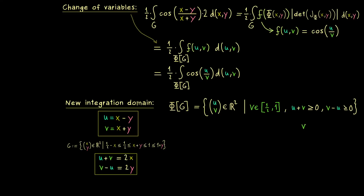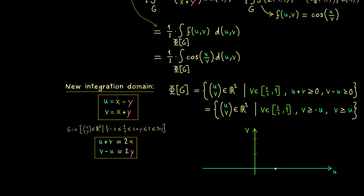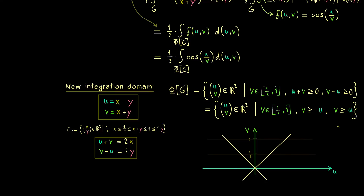Isolating v gives: v ≥ minus u and v ≥ plus u. This is the image of g, and we can sketch it in the uv-plane. We know v stays positive and within the strip between 1/2 and 1. The two linear functions v = minus u and v = plus u are symmetric. Our region lies above both, forming a manageable shape. The original domain g was just rotated by phi, but this already helps because v now lies in a complete interval.